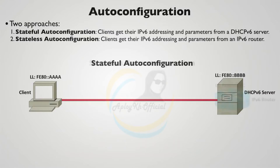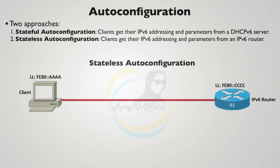Let's consider the stateless auto configuration approach. This is where the router can send a router advertisement to the all-nodes multicast address. The router does this periodically, but sometimes it might be two minutes between regular router advertisements — that's a long time for the client to wait. We're about to see how the client can proactively ask the router to send a router advertisement.